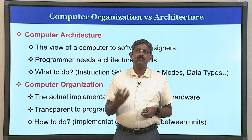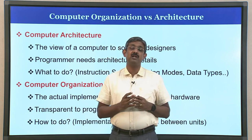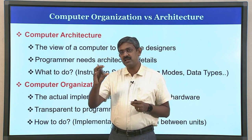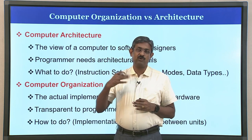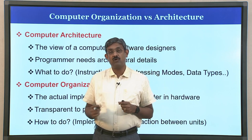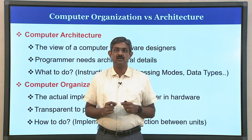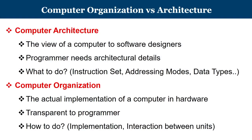When you come to computer organization, we are talking about the actual implementation of a computer in hardware. There are various functional units, and it is about how these functional units interact with each other — the micro-architectural details of all these functional units and how they work. These are all implementational details which are transparent to a programmer; the organizational features are not visible to him.